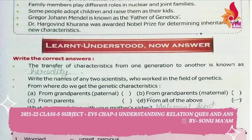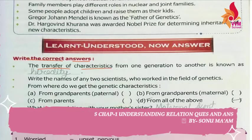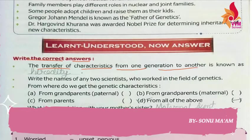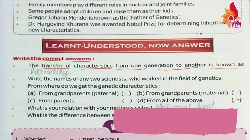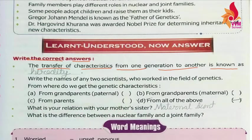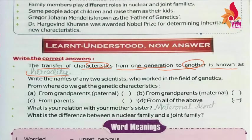So our first question is: write the correct answers. The transfer of character states from one generation to another is known as — two characters from one generation pass to another generation. So what do we call them? We can call them Heredity.